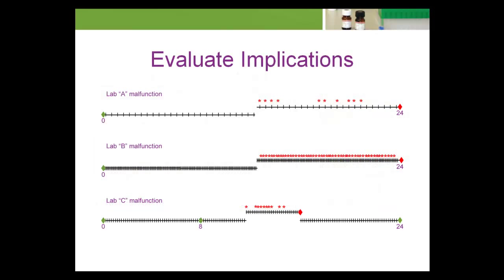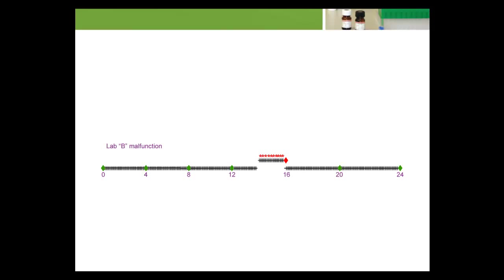The number of patient specimens examined between QC evaluations is 50 for Labs A and C, but 300 for Lab B. If Lab B examined the same number of patient specimens between QC evaluations as Lab A — every 50 patient specimens, or every 4 hours instead of every 24 hours — there would be a similar outcome in the event of a malfunction. The number of patient specimens examined between QC evaluations is the critical design factor for managing the risk of producing unreliable patient results in the presence of an undetected malfunction.